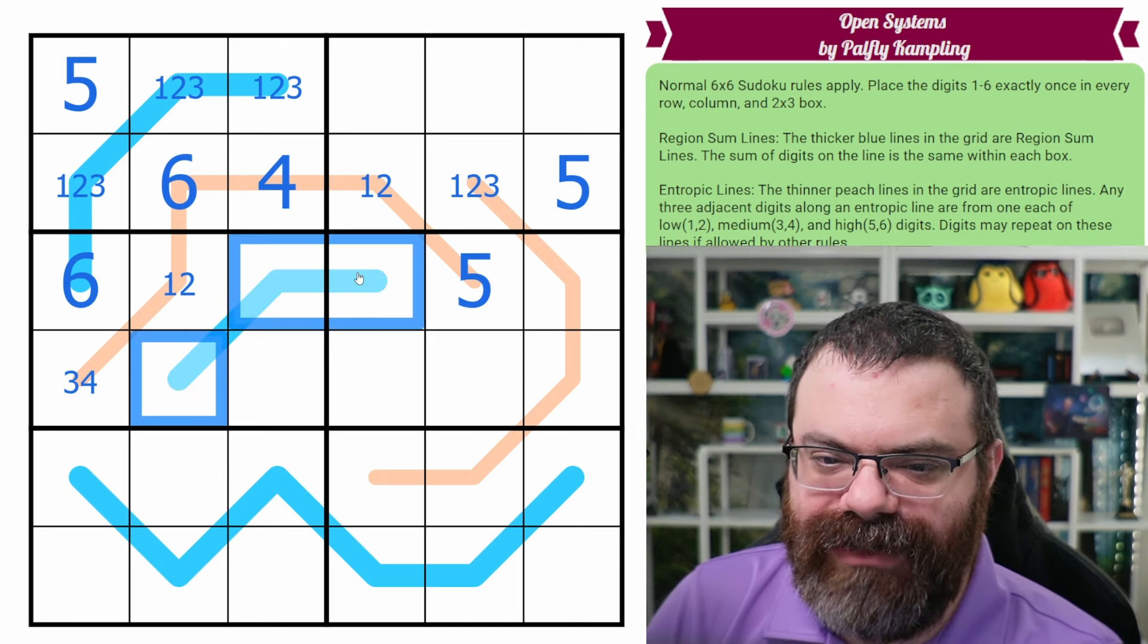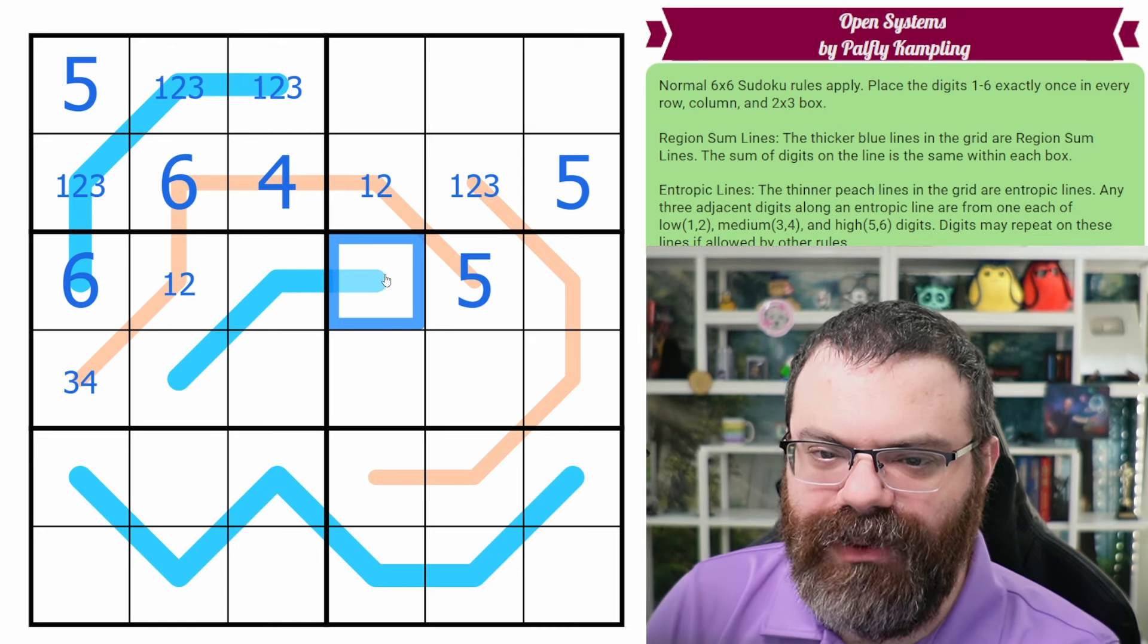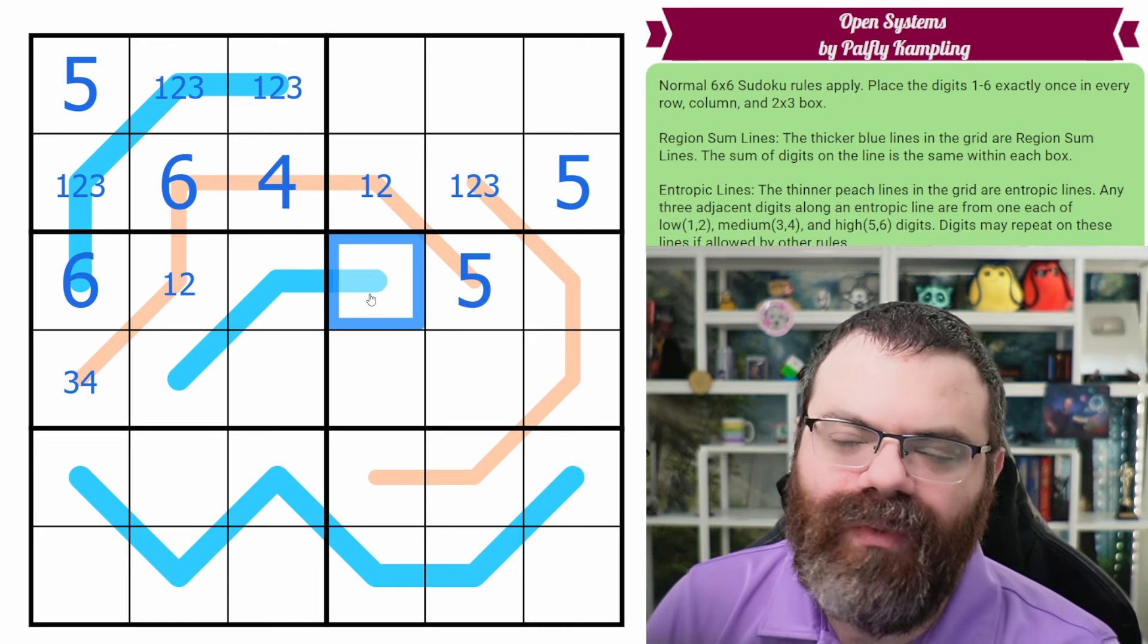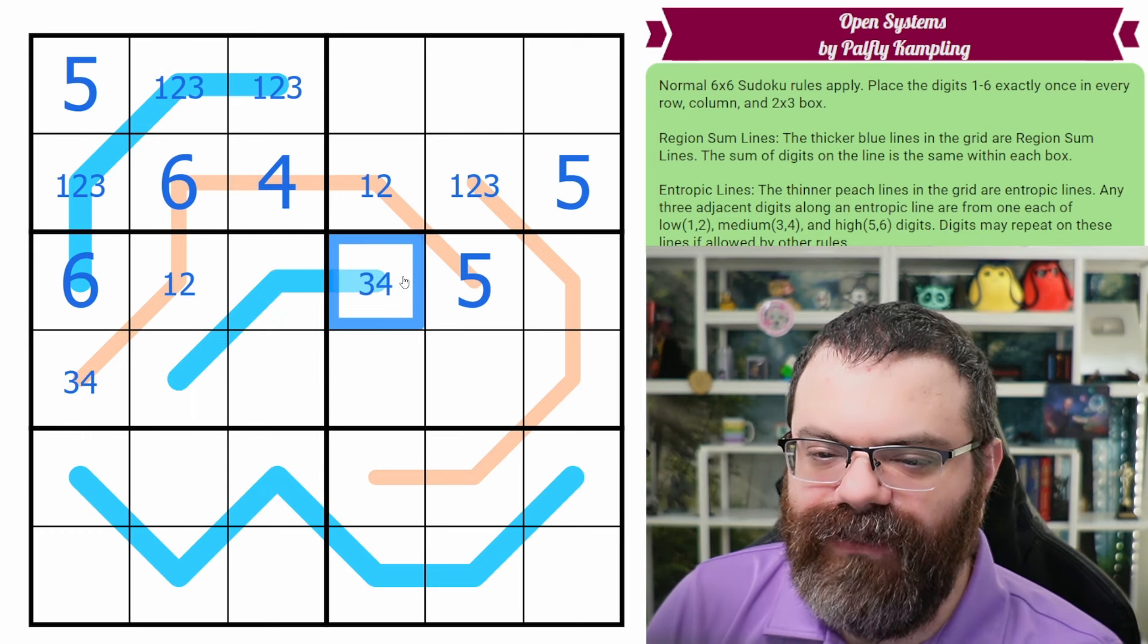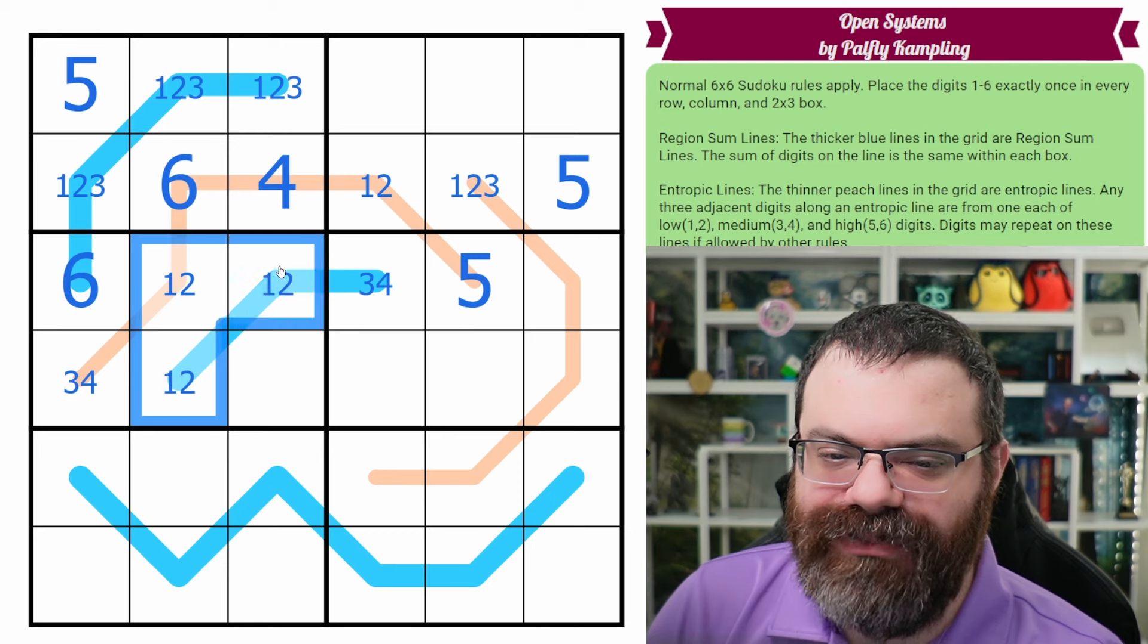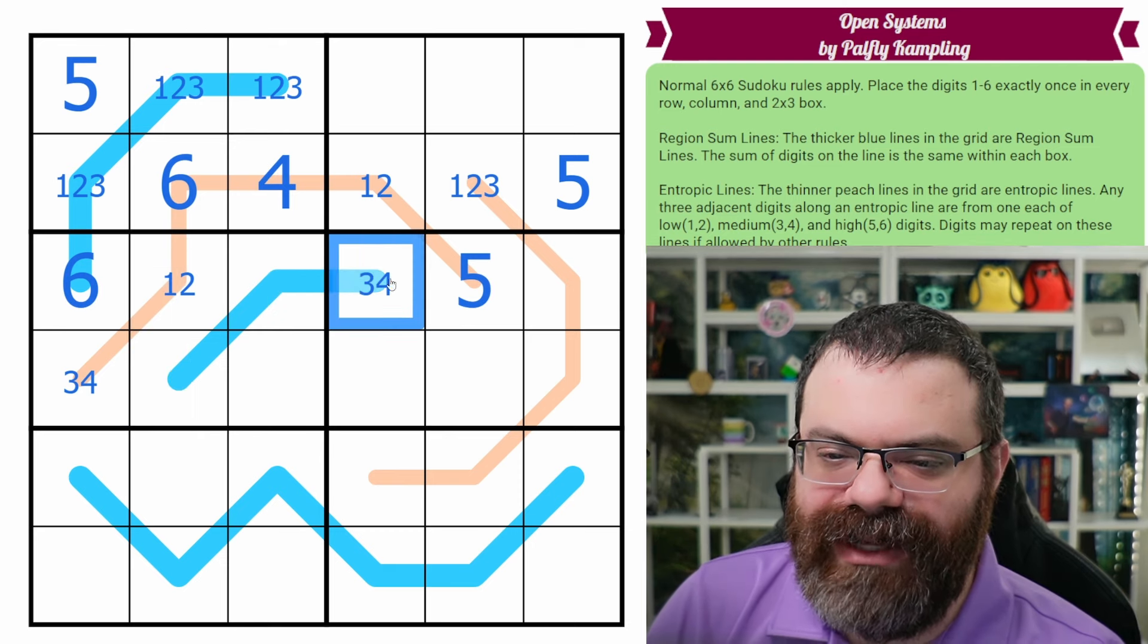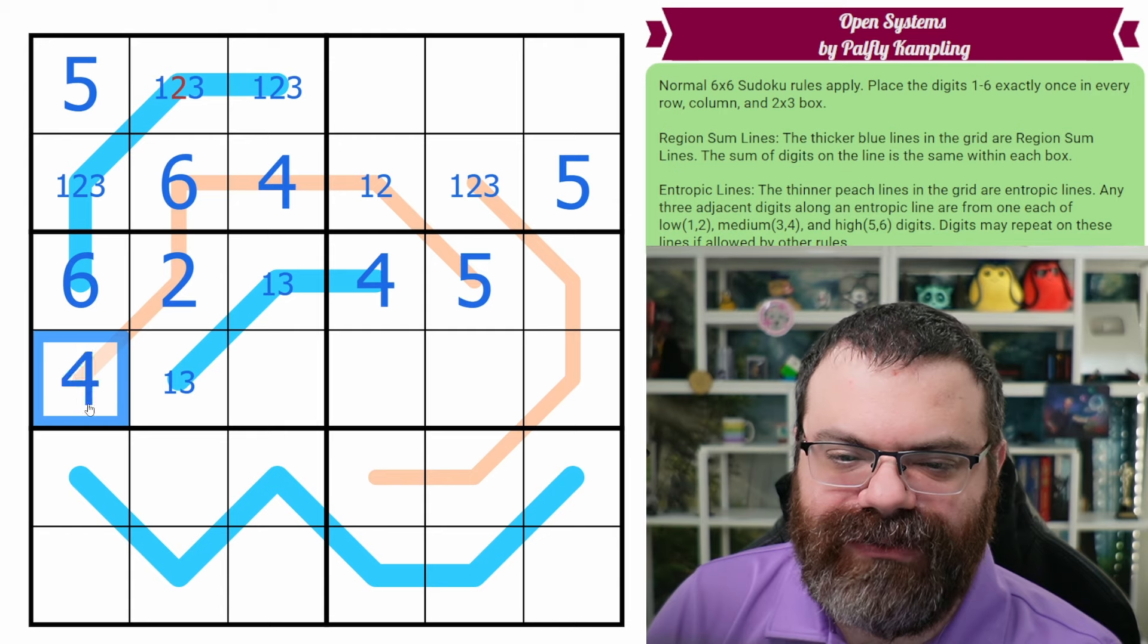Okay, so this is a region sum line. Maybe there's something going on here. This can't be any bigger than 4, but it also can't be 1 or 2 because we can't have two digits add to 1 or 2. So this is 3 or 4 naively. But if this was actually a 3, this would have to be 1, 2, and we'd have too many 1-2s in the box. So actually this has to be 4. This is a 1, 3 pair. And that resolves these. This is 2, this is 4.